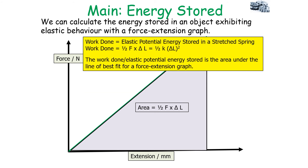To summarise: work done equals the elastic potential energy stored in a stretched spring. Work done = ½FΔL, and also work done = ½KΔL². We can determine the work done or elastic potential energy stored in a material from the area under the line of best fit on a force-extension graph. The gradient of a force-extension graph gives the spring constant, while the area under the graph for an elastic object gives the work done or elastic potential energy stored.